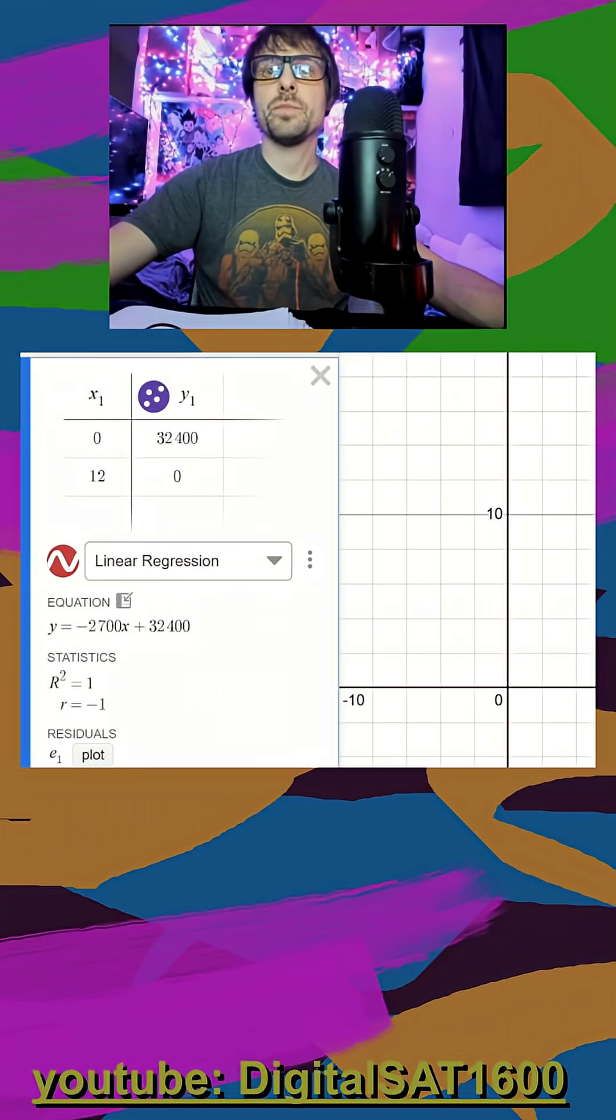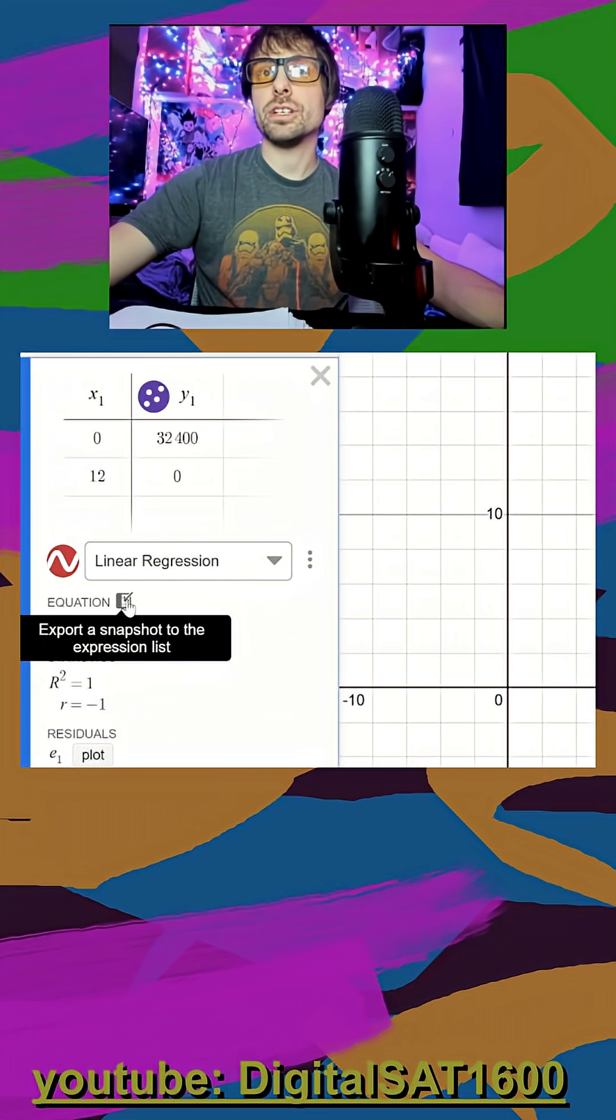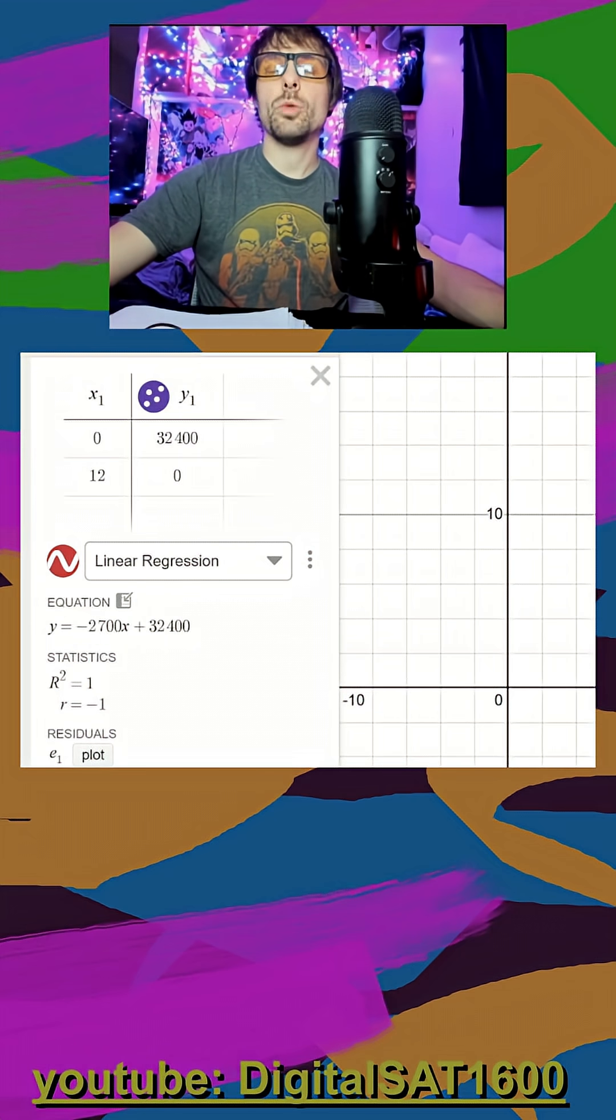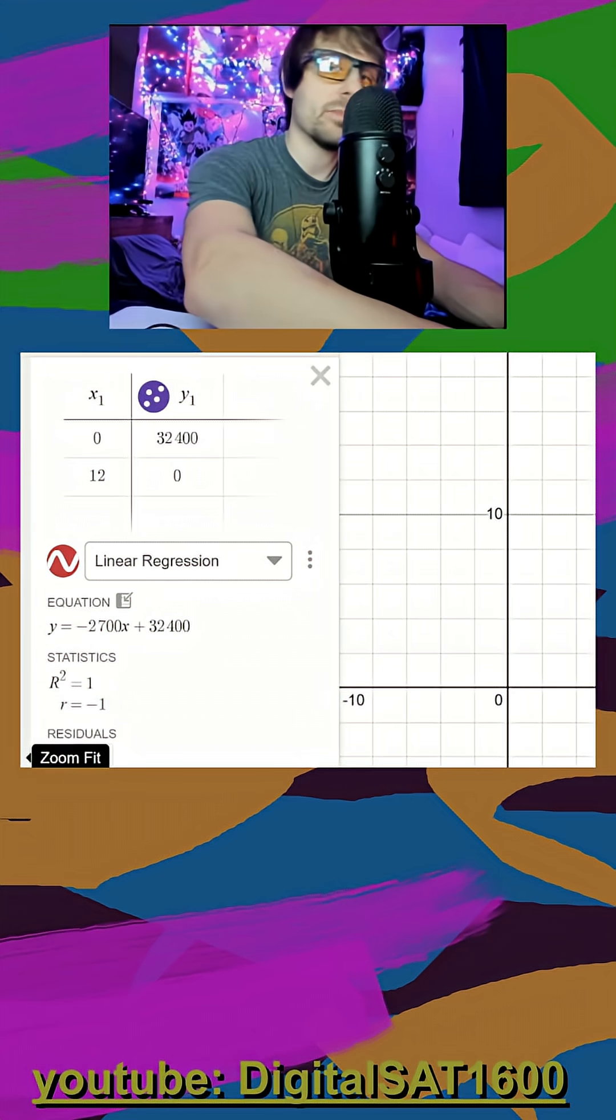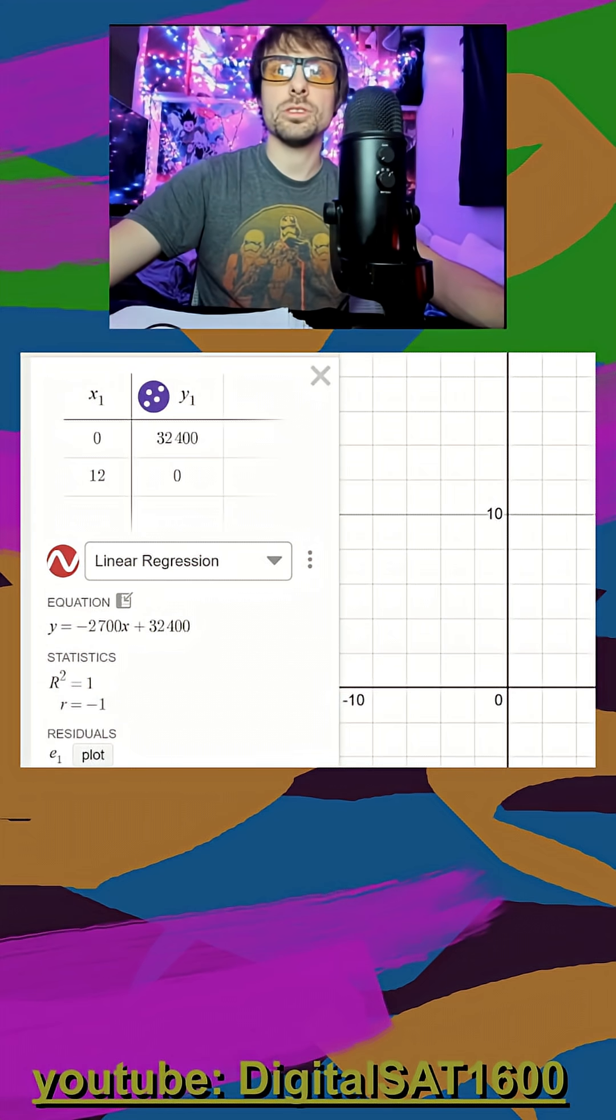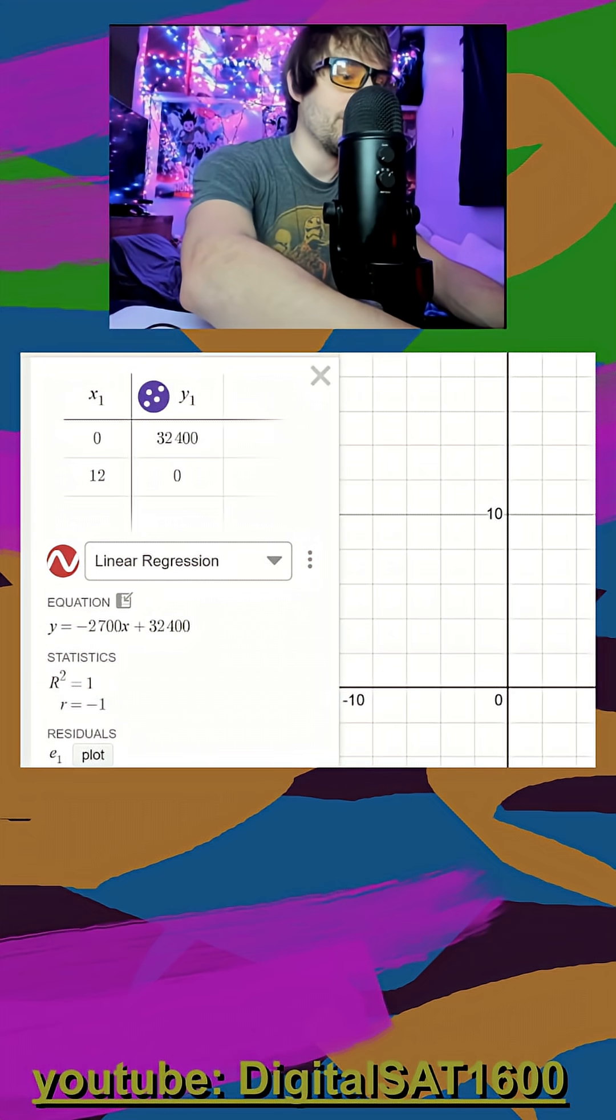So I jump back on Desmos, and I say, okay, let's grab our equation here. Down below, if they ever want you to plug in a certain value for x, you could just do it, or I could make it like this: f of x is equal to, and I can say f of 4.